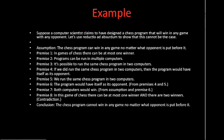Here's an example. Suppose a computer scientist claims to have designed a chess program that will win in any game of chess with any opponent. Let's use reductio ad absurdum to show that this cannot be the case. To do this, we go ahead and assume that the computer scientist's claim is true — that the chess program can win in any game of chess no matter what opponent is put before it.